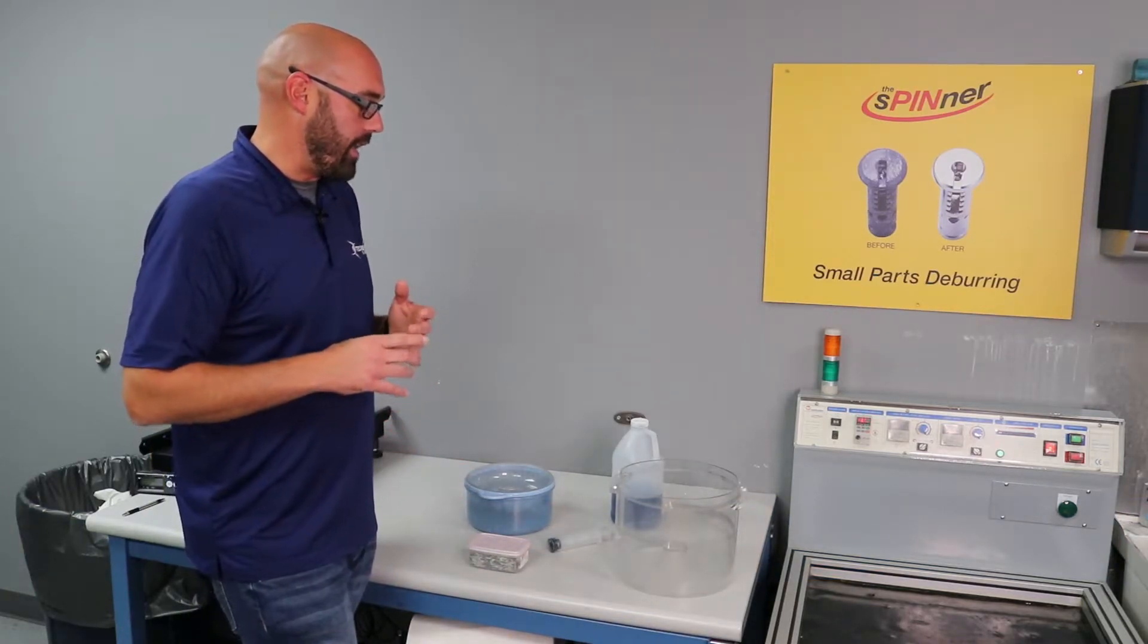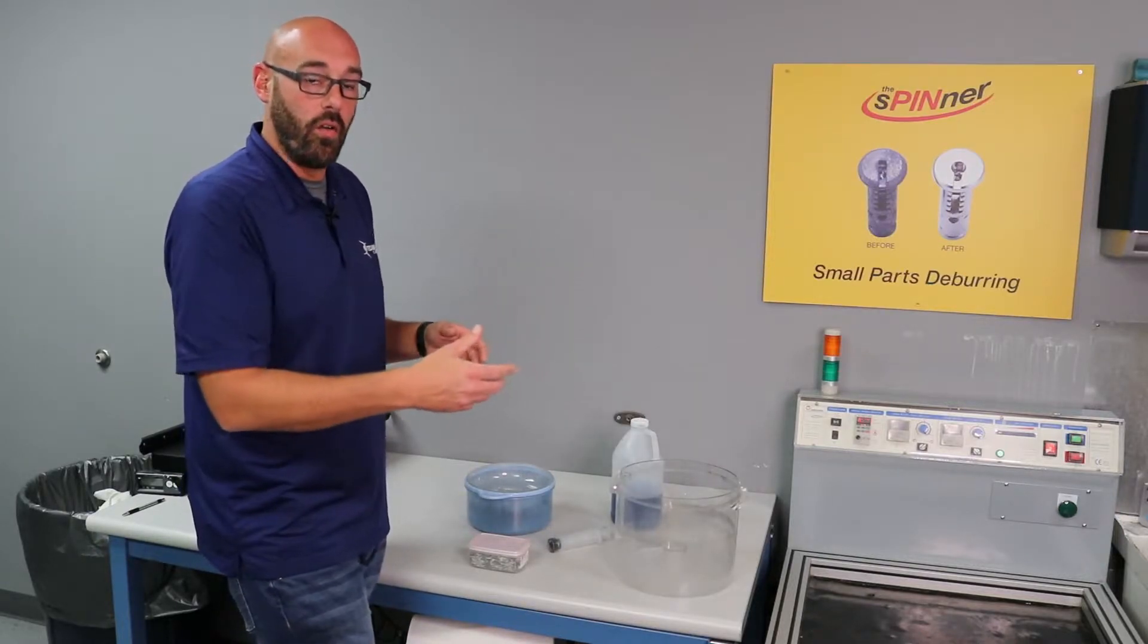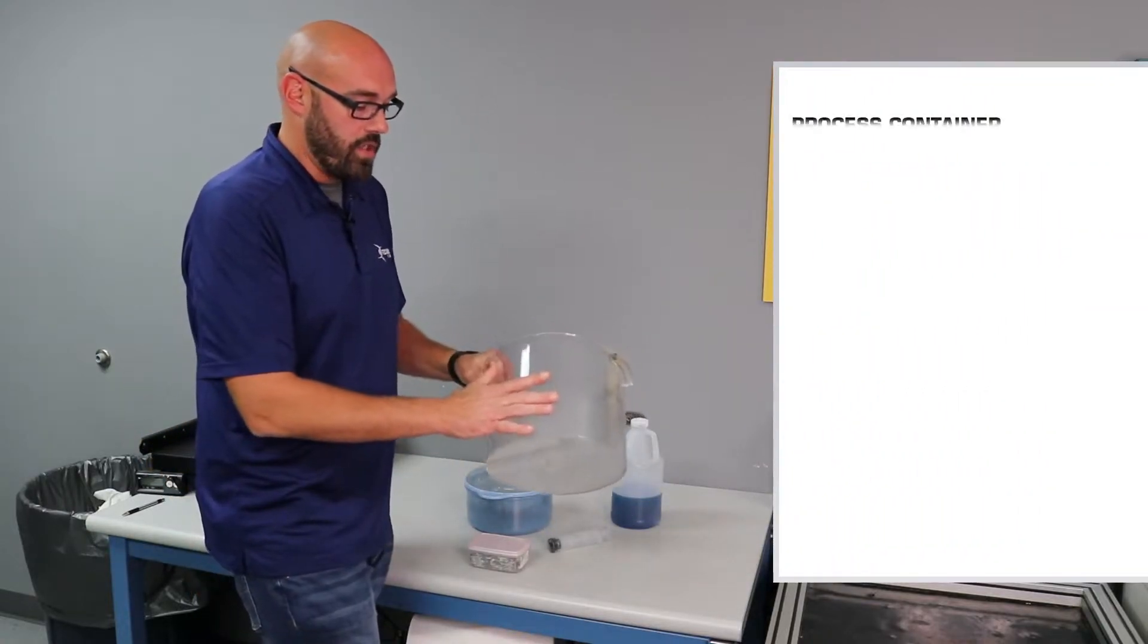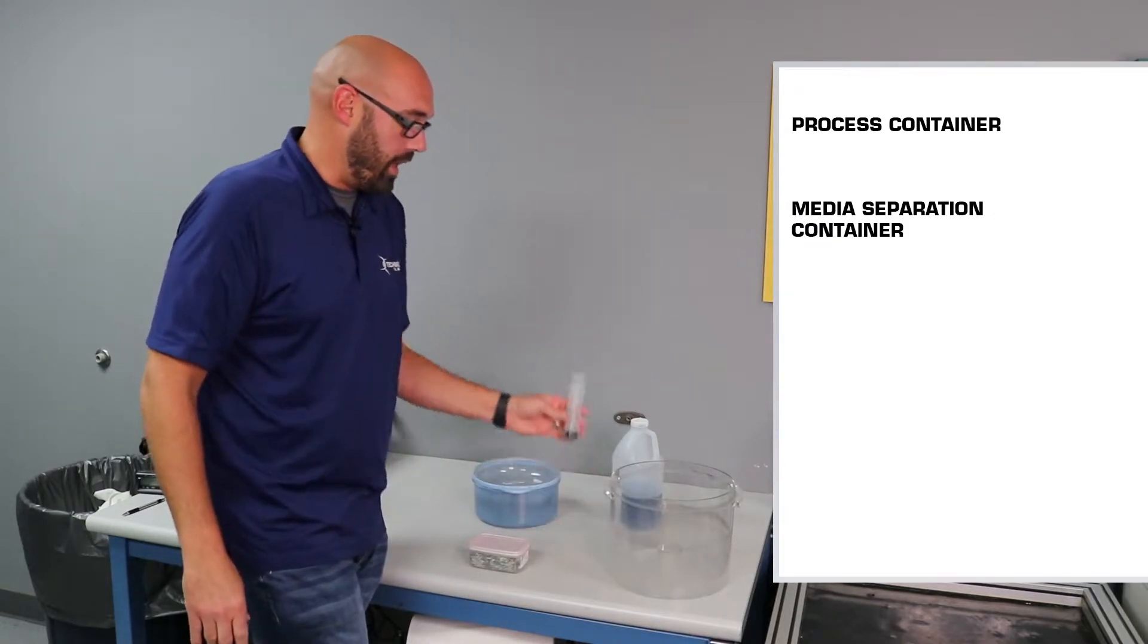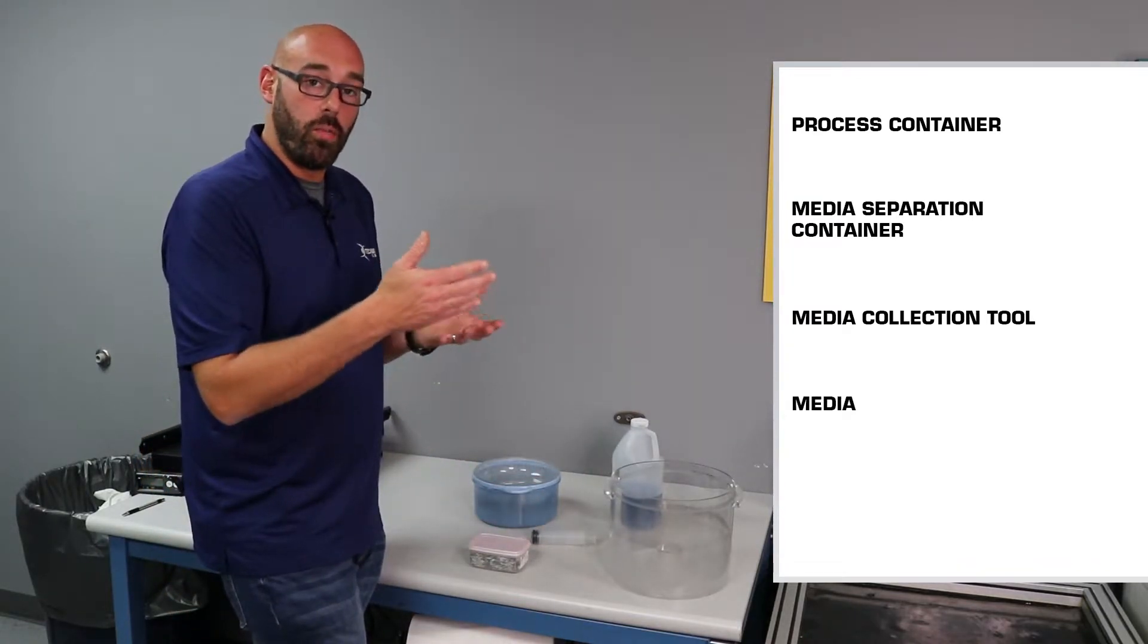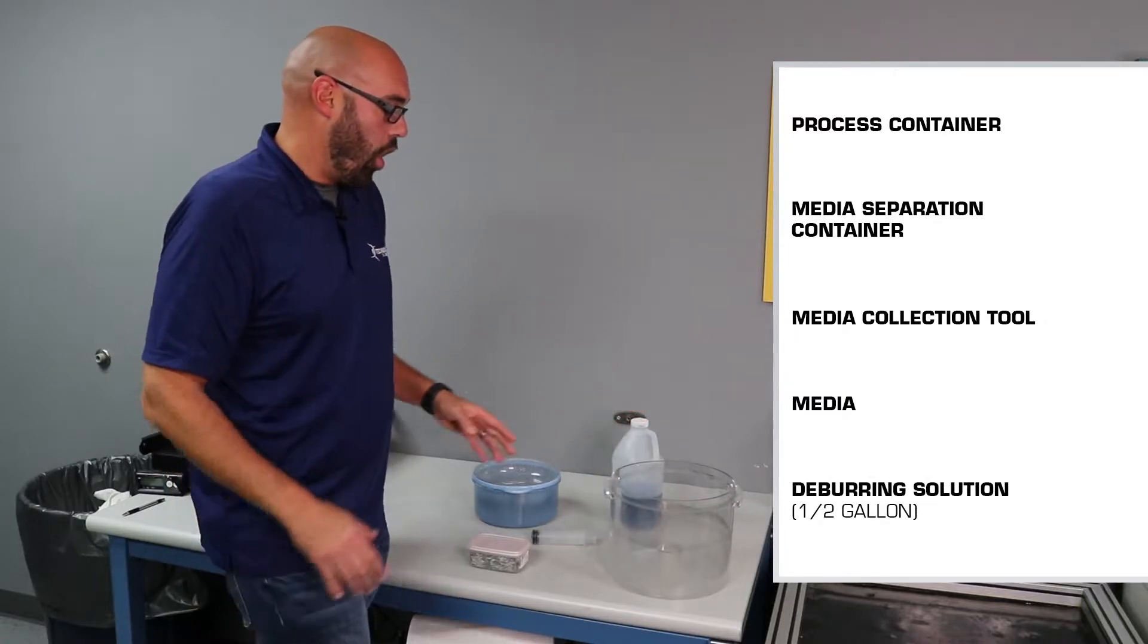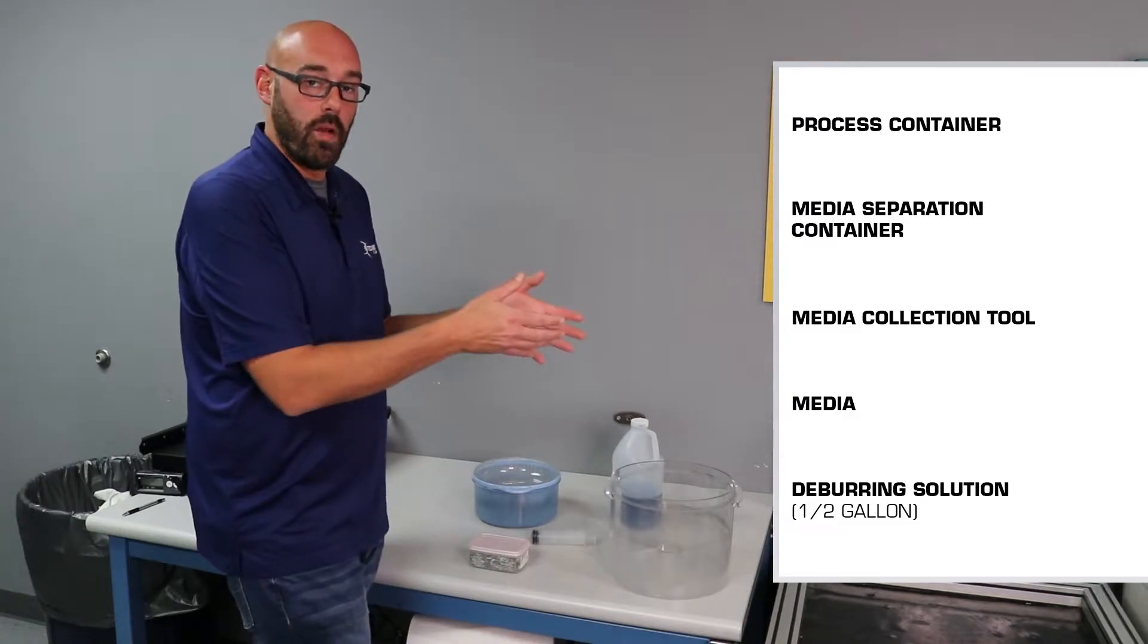First off I want to talk about the supplies and material that's going to come with the machine itself so you can get it into production. You're going to come with a process container, a media separation container, a media collection tool, kilo of media depending on what size you might get multiple or just one, as well as a half gallon deburring solution. All of these are going to be very pertinent when it comes to processing parts in the spinner machine.